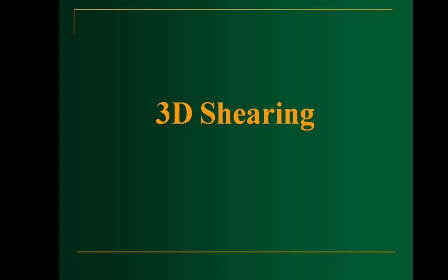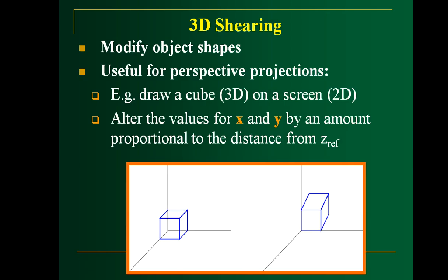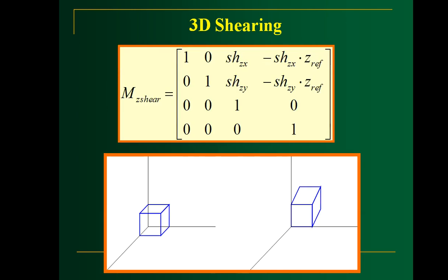The last transformation is shearing. The difference between scaling and shearing is that scaling increases or reduces the size of an object, whereas shearing modifies the shape of the object. Here is an example. You can shear the object with respect to all three axes. A matrix is provided for shearing with respect to the Z axis, and you can also derive the matrices for the X-axis and Y-axis shearing.